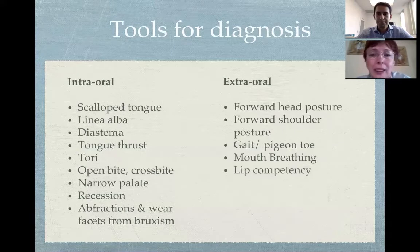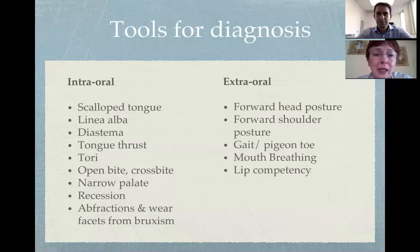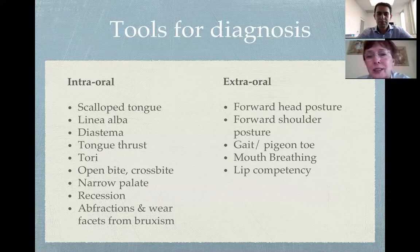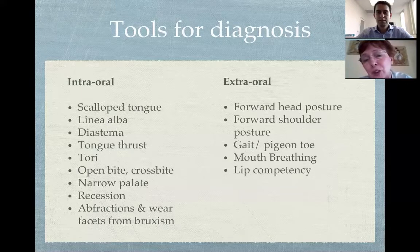There are intraoral and extraoral signs we can look for. Intraoral signs include scalloped tongue, linea alba, diastema, tongue thrust, tori, open bite, crossbite, narrow palate, recession, and wear facets from bruxism. Extraoral signs include forward head posture, forward shoulder posture, gait abnormalities like pigeon-toed walking, mouth breathing, and lip incompetency.